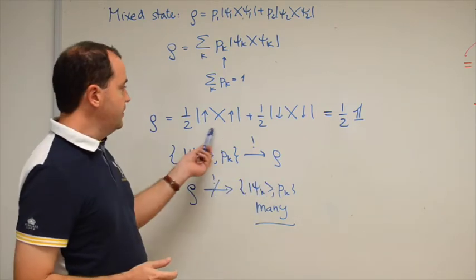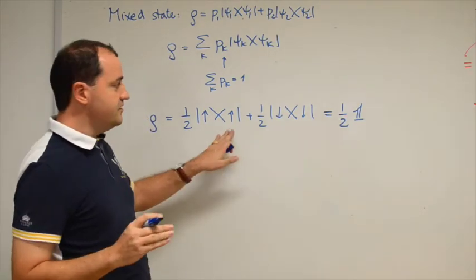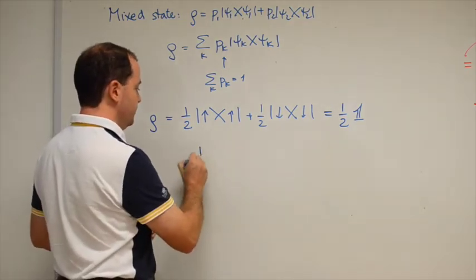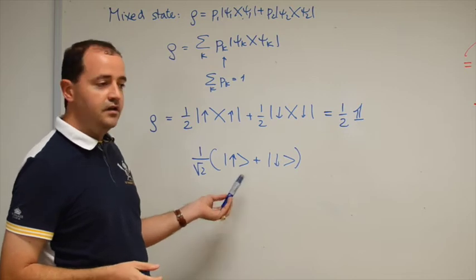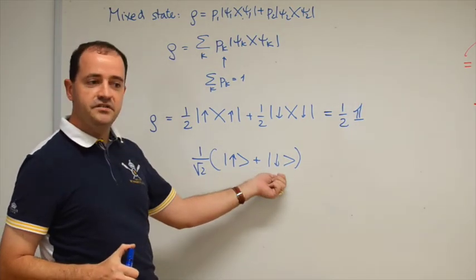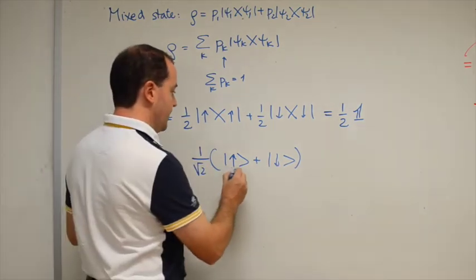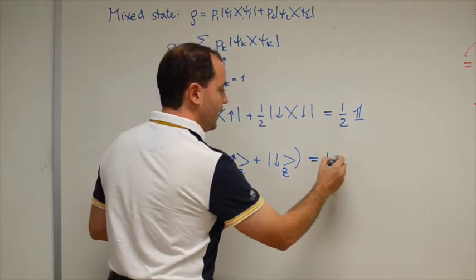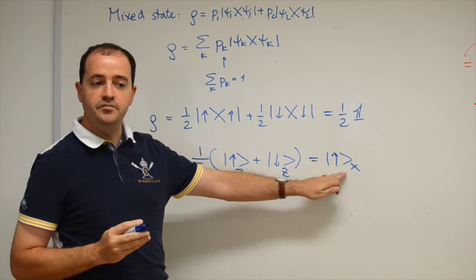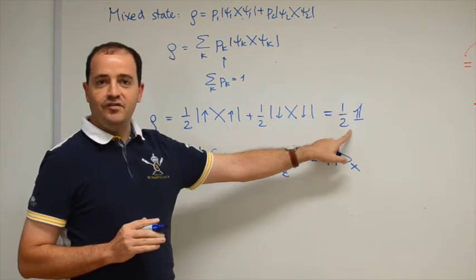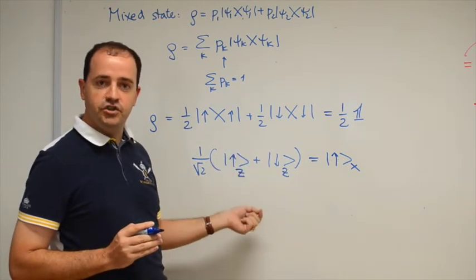The other remark I want to make is that the mixed state rho = I/2 is extremely different from a pure state that would be written as a superposition. In many elementary courses, a superposition state is described as 'half of the time the spin is up and half of the time the spin is down,' but this description is inappropriate — that is the description of the mixed state. A superposition is a pure state. If the mixed state is up and down along z, the superposition state would be up along x. It has very well-defined properties along x, it simply doesn't have well-defined properties along z. Please keep in mind the difference between a mixed state and a pure state written as a superposition in a different basis.